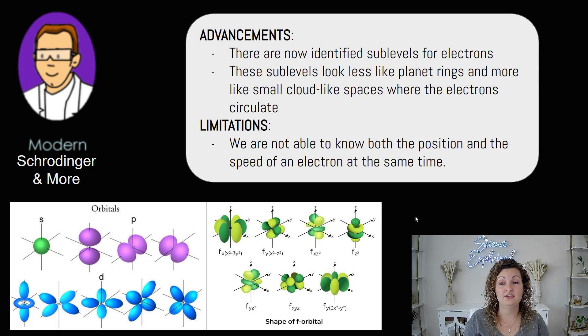But this is our new claim and this is what we believe even to this day. We do have tons of advancements learning about our clouds, orbitals, and sub levels, but our limitations are still there. Even currently to this day, we are still not able to know the position and the speed of an electron at the same time. So hopefully with new technology, we will be able to determine these things simultaneously.